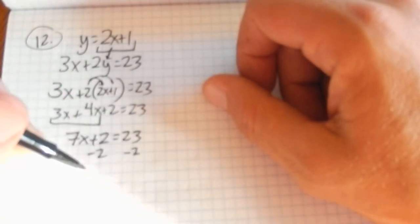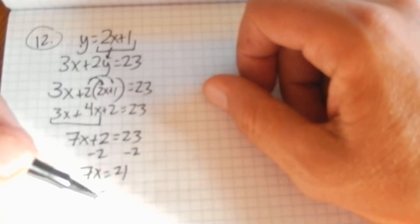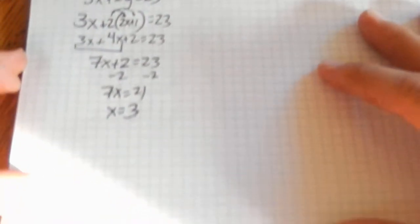Subtract 2 from both sides. 7x is 21. Divide by 7. Looks like x is 3.